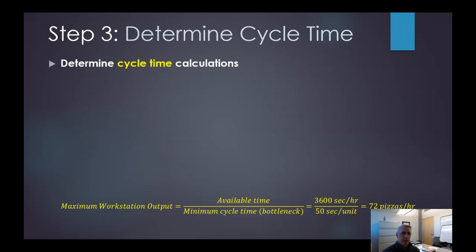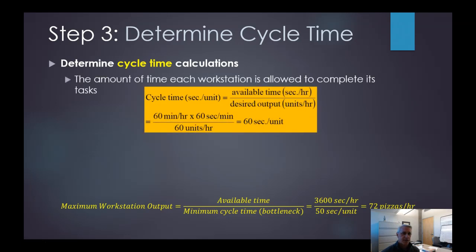Okay, so we've got to determine our cycle time. So we have cycle time calculations. That's the amount of time each workstation is allowed to complete its task. So cycle time is essentially the available time, which is the total number of seconds per hour, divided by the desired output. So remember, we have 3600 seconds or 60 minutes per hour times 60 seconds divided by 60 units per hour. So this is what she wants, right? So we're trying to determine what does the cycle time have to be to produce those 60 pizzas per hour. That means that we have to have one minute per unit. We only have 60 seconds to produce a pizza. So we've got to get one a minute.